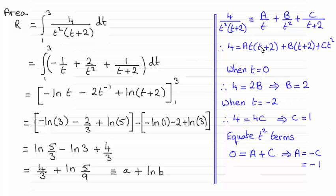When t equals 0, that's a good one because it takes out this term here and it takes out this term. So that just allows you to work out what B is, turns out to be 2.